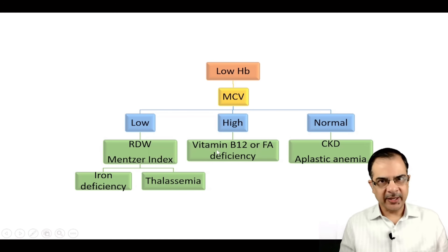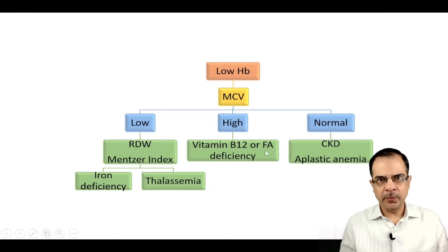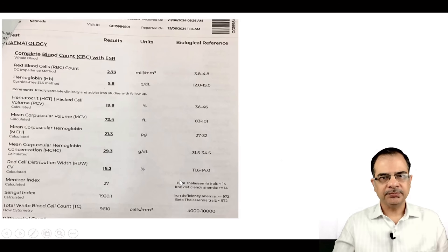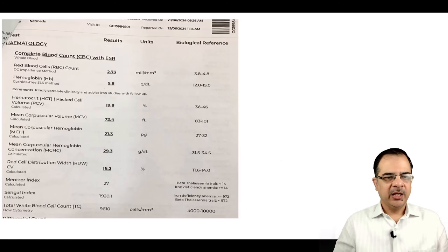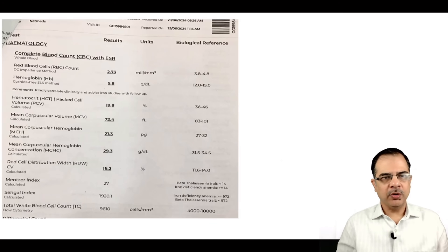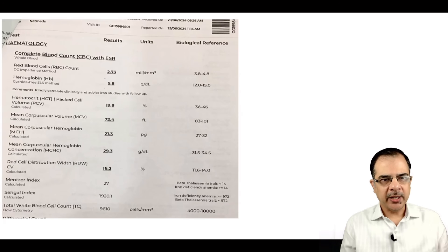If MCV is high and the patient has neuropathic symptoms, think B12 deficiency; without neuropathic features, consider folic acid deficiency. If MCV is normal, consider CKD or aplastic anemia.